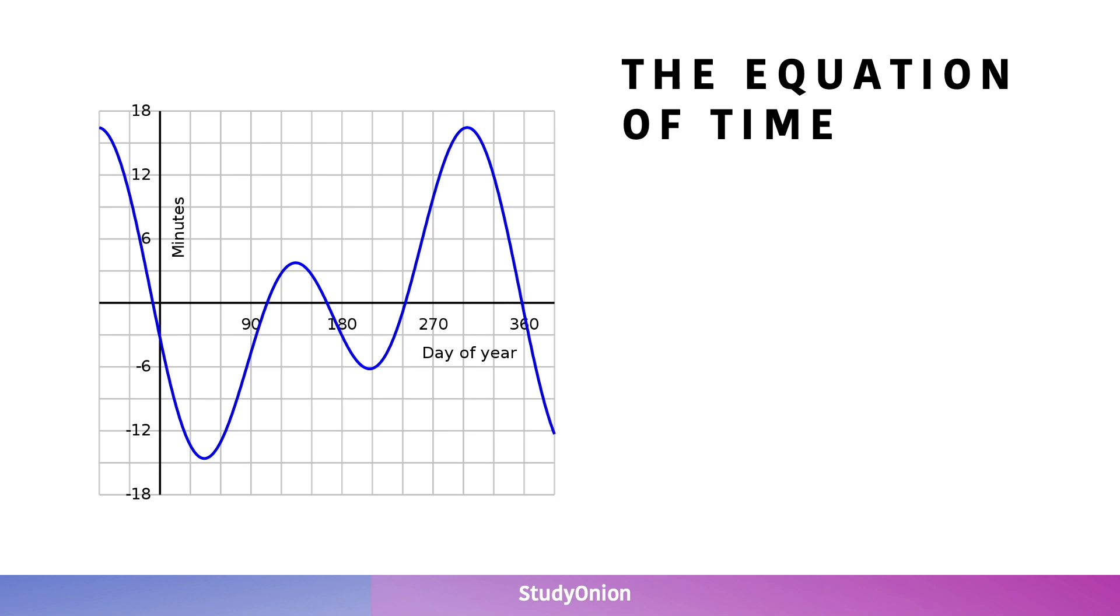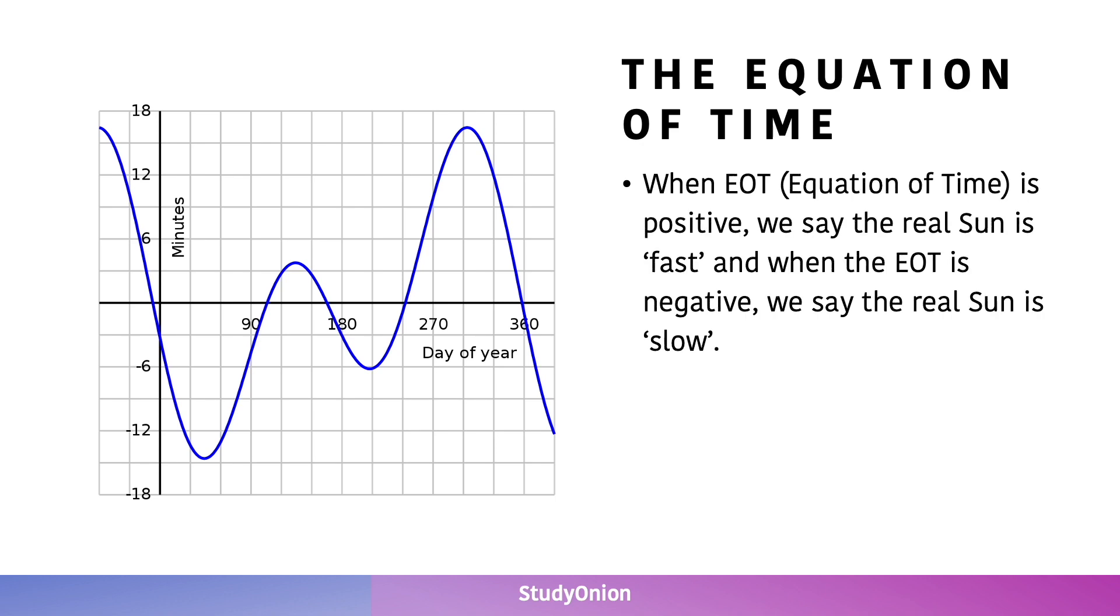When the equation of time is positive, we say that the real sun is fast, and that just means it's moving faster in the sky than the mean sun. And when the EOT is negative, we say that the real sun is slow, meaning it's moving slower in the sky than the mean sun.